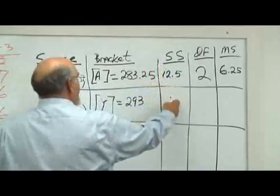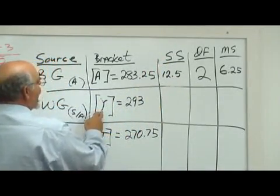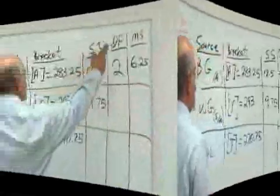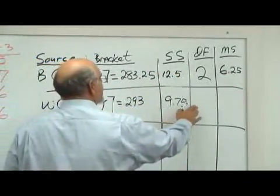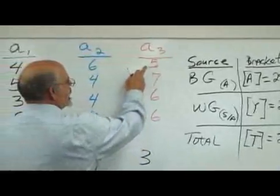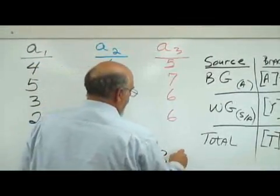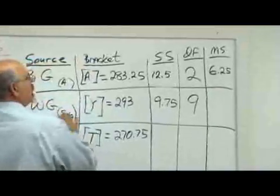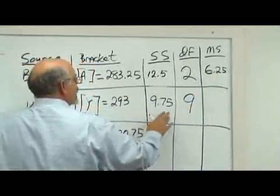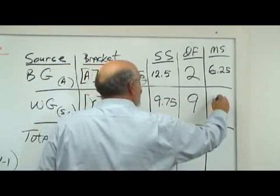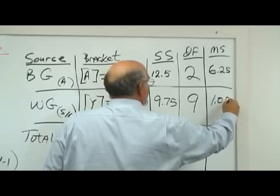The within group sum of squares is Y minus A. That looks like 9.75. The degrees of freedom for the within group is A times N minus 1. A is 3. N is the number per group. So that's times 4 minus 1 is 3 times 3. That's 9. And then the mean square of this is the sum of squares divided by the degrees of freedom. And that comes out to be 1.08 roughly.